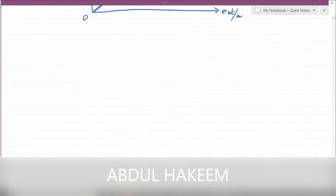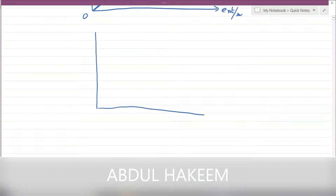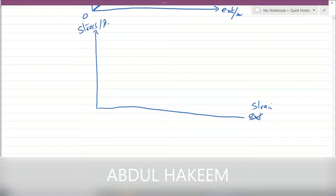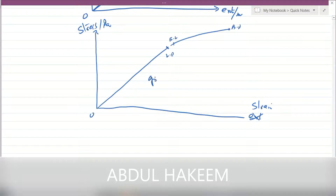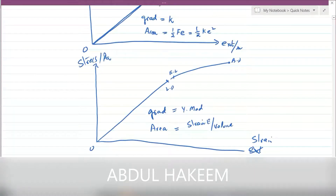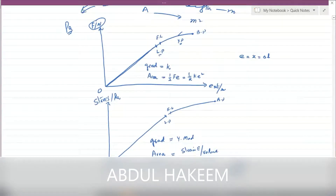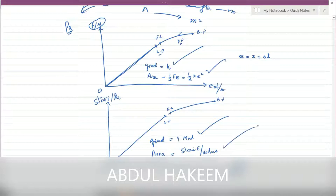When the graph is plotted between stress and strain for a solid — strain on the x-axis, stress on the y-axis in pascal — for metals it has the same shape. This point is the limit of proportionality, this is the elastic limit, and this is the breaking point. Now the gradient is not the material constant; it is Young's modulus. And the area is not just strain energy — it is strain energy per unit volume. That is the difference between the force-extension graph and the stress-strain graph.